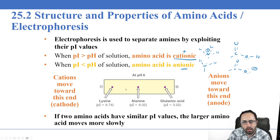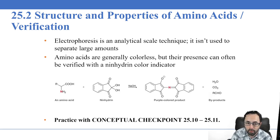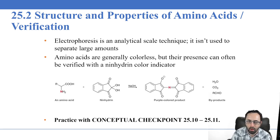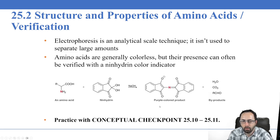Electrophoresis is not really suitable for large amounts of proteins — there are other methods, such as gel electrophoresis, commonly used in biomedical research. Electrophoresis is an analytical-scale technique useful for research. Amino acids are generally colorless, but you can detect their presence by reacting them with the ninhydrin reagent. Ninhydrin reacts with the amino group to produce a larger purple-colored complex, so we can visualize the presence of amino acids by the appearance of purple color.